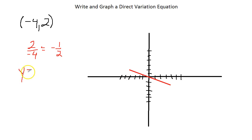So, our equation is y equals, this is our k. Remember, y equals k times x is the equation for direct variation. So, we just plug that in. So, y equals negative 1 half x. And, there we go.